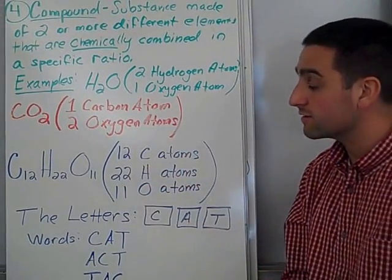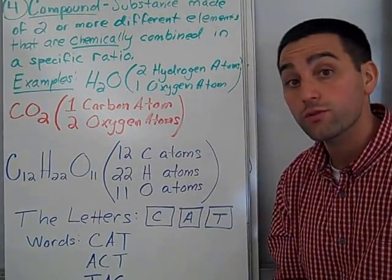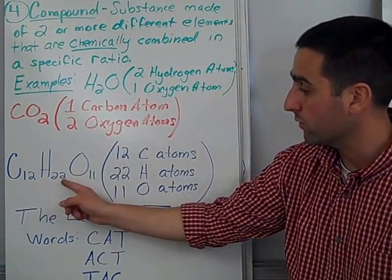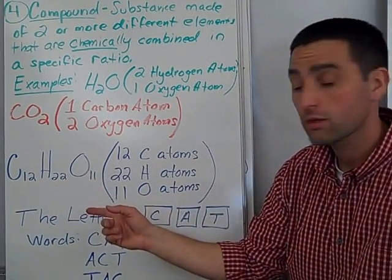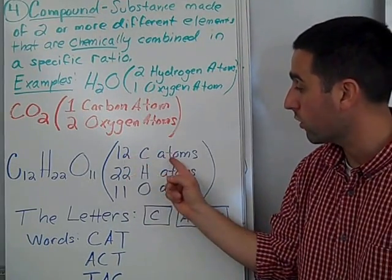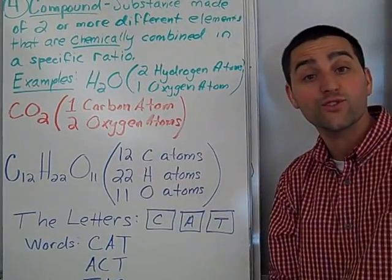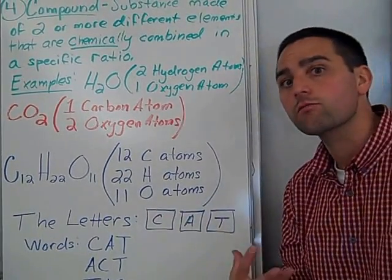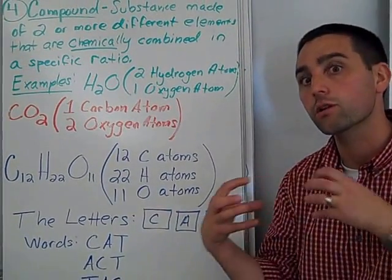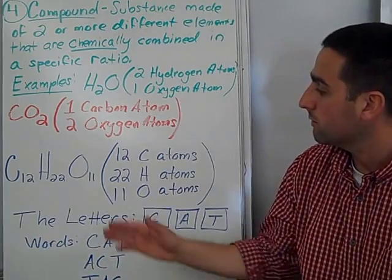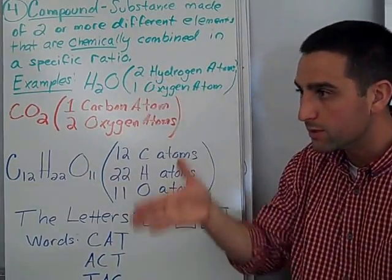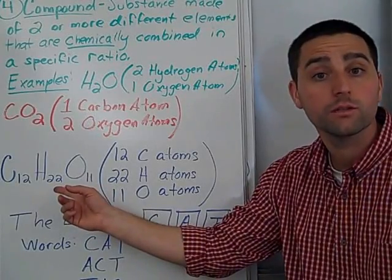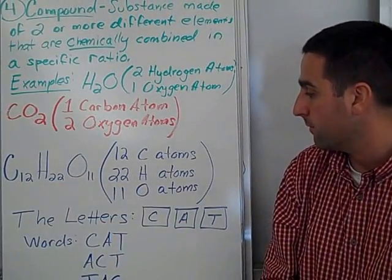And then we can start getting into some larger compounds like sucrose, which is table sugar. C12, H22, O11. And once again, the ratios are 12 carbon atoms to 22 hydrogen atoms to 11 oxygen atoms. Some of these molecules can get really big and they can make really big chains. But sugar, if I keep on trying to cut sugar in the end, I'm still going to end up with this formula. It's a pure substance.